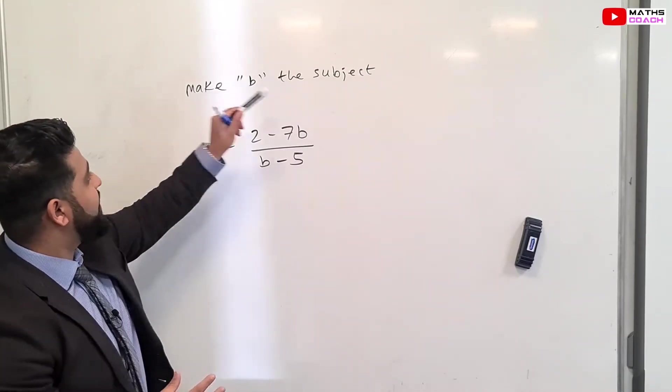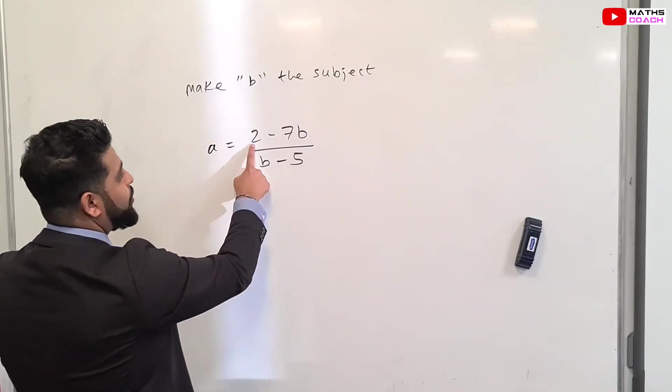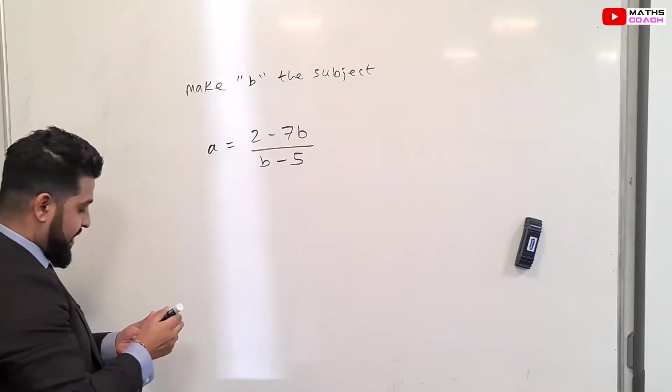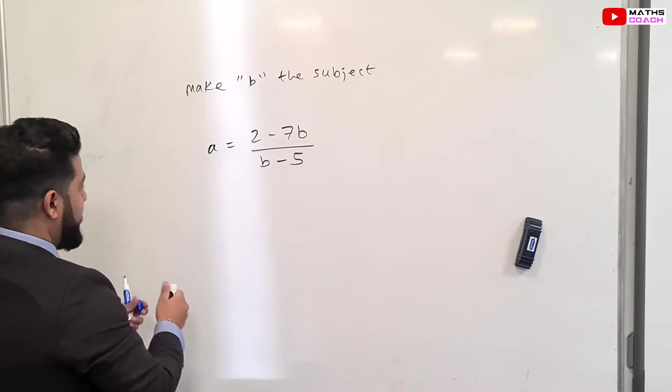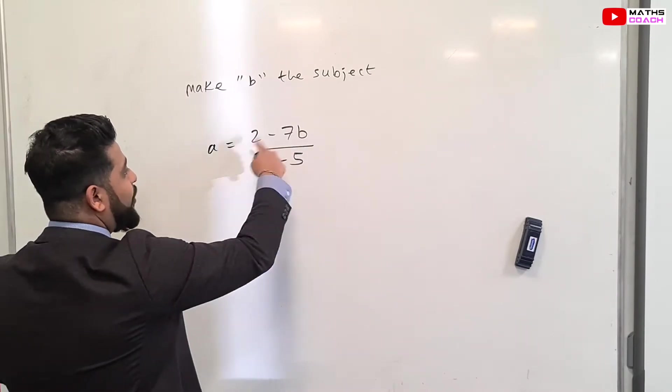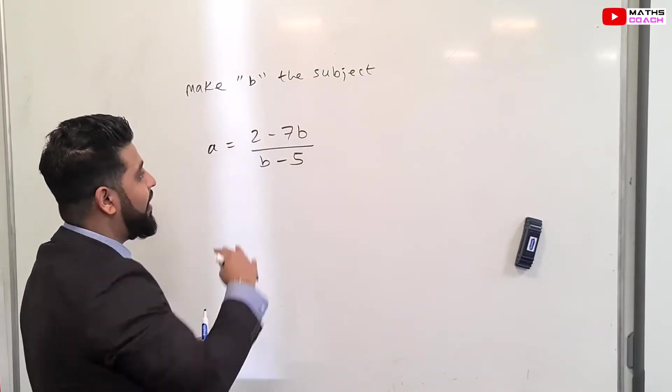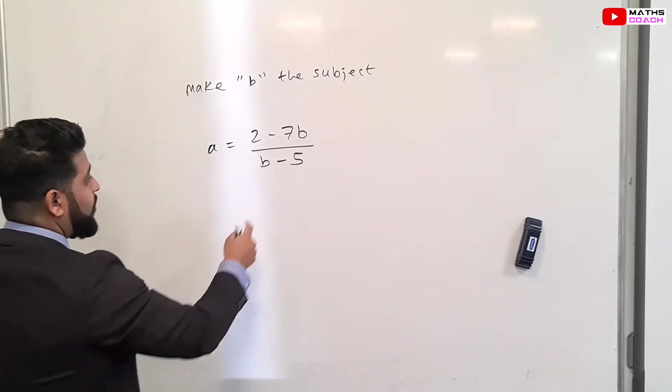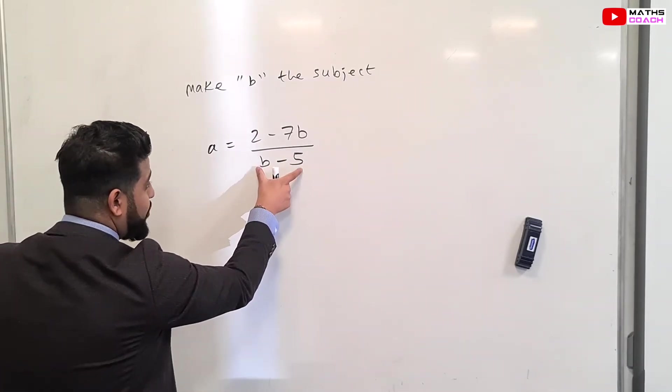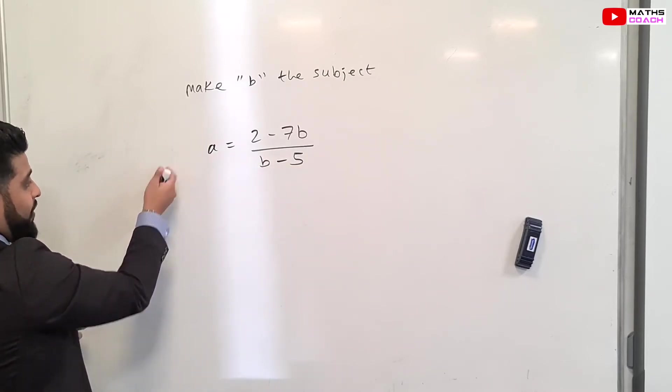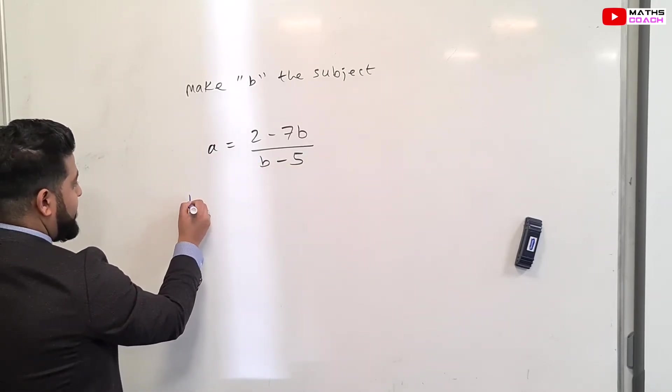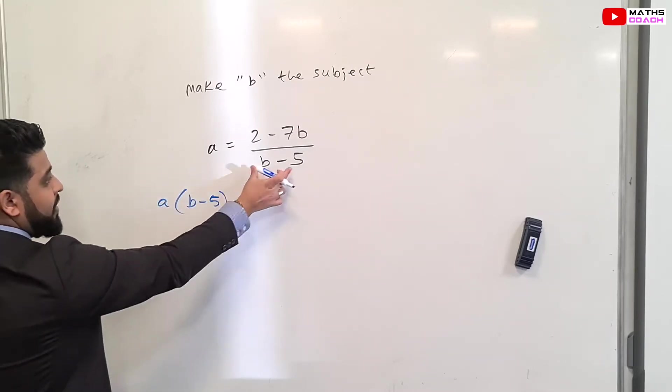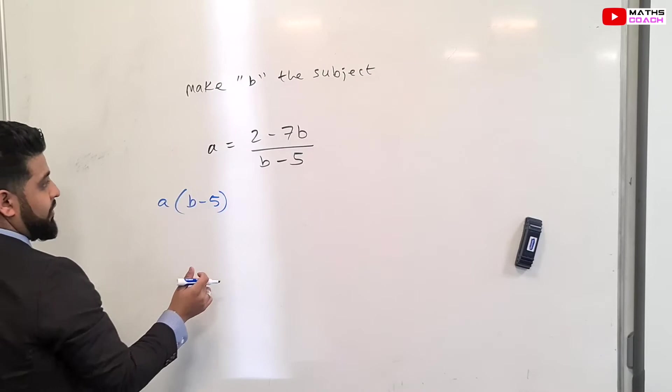Next question. Fractions involved. We want to make B the subject. We have A is equal to 2 minus 7B divided by B minus 5. Now this is an interesting question because we have B on the same side, but they are part of a numerator and part of the denominator. So first we want to get rid of this. We want to make this multiply over on this side. So we are going to have B minus 5 multiplying with our A here.